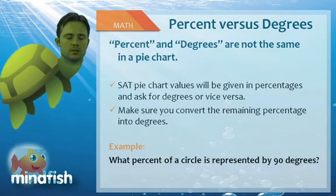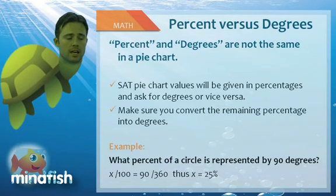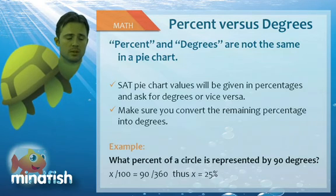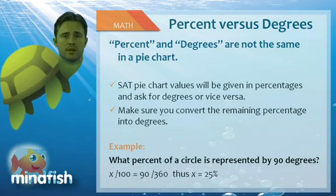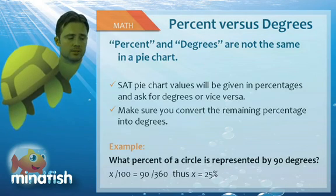What percent of a circle is represented by 90 degrees? We say 90 over 360 equals x over 100 and solve. X equals 25%, or a quarter of the circle, which is easy to see visually if you draw out 90 degrees of a circle.